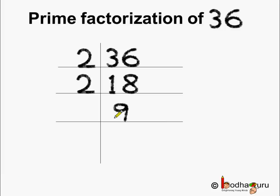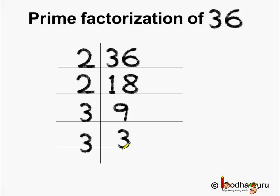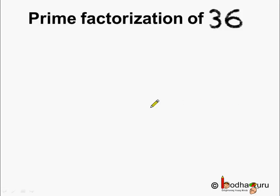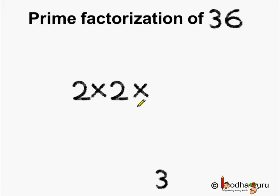So we need to divide it by another odd number. Let us try to do it with 3. So 3 threes are 9. We will put here 3 — 3 threes are 9. And last we get 3, which is an odd number and also a prime number. So 3 ones are 3. Here the prime factorization of 36 is done and we get the factors as 2, 2, 3, 3. So the prime factorization of 36 is equal to 2 multiplied by 2 multiplied by 3 multiplied by 3.